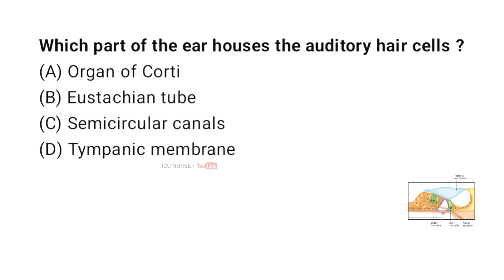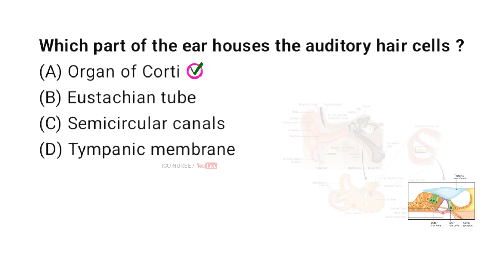Which part of the ear houses the auditory hair cells? A. Organ of Corti, B. Eustachian tube, C. Semicircular canals, D. Tympanic membrane. And the correct answer is A. Organ of Corti.